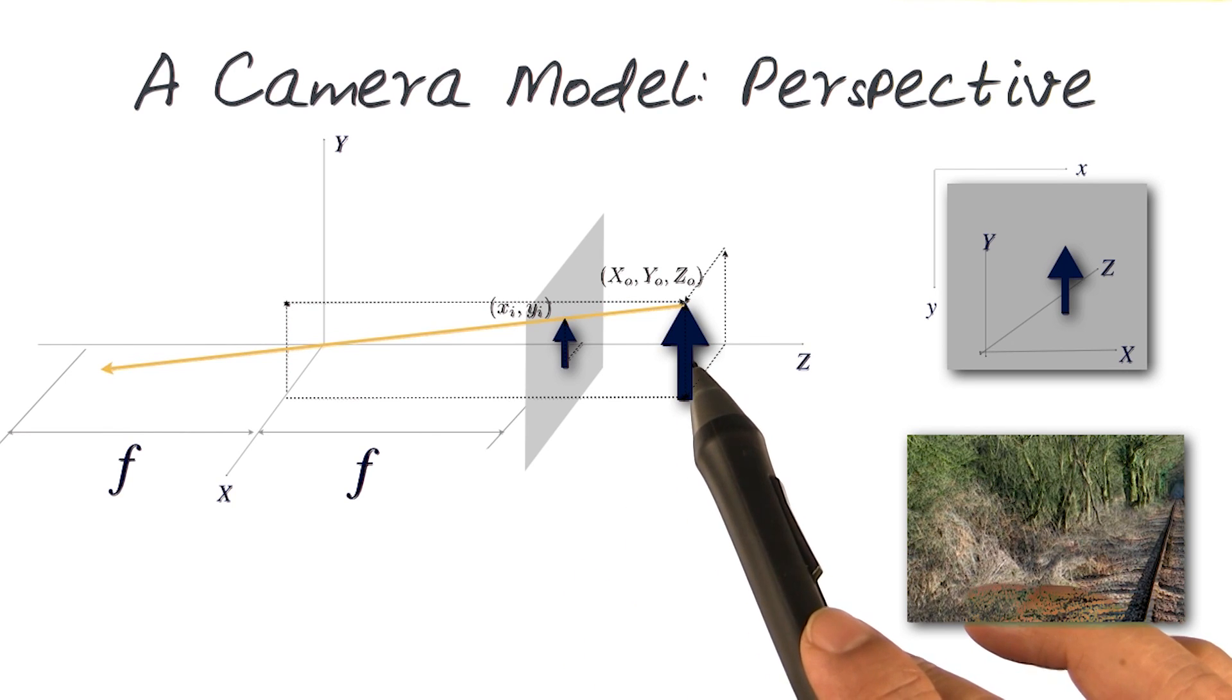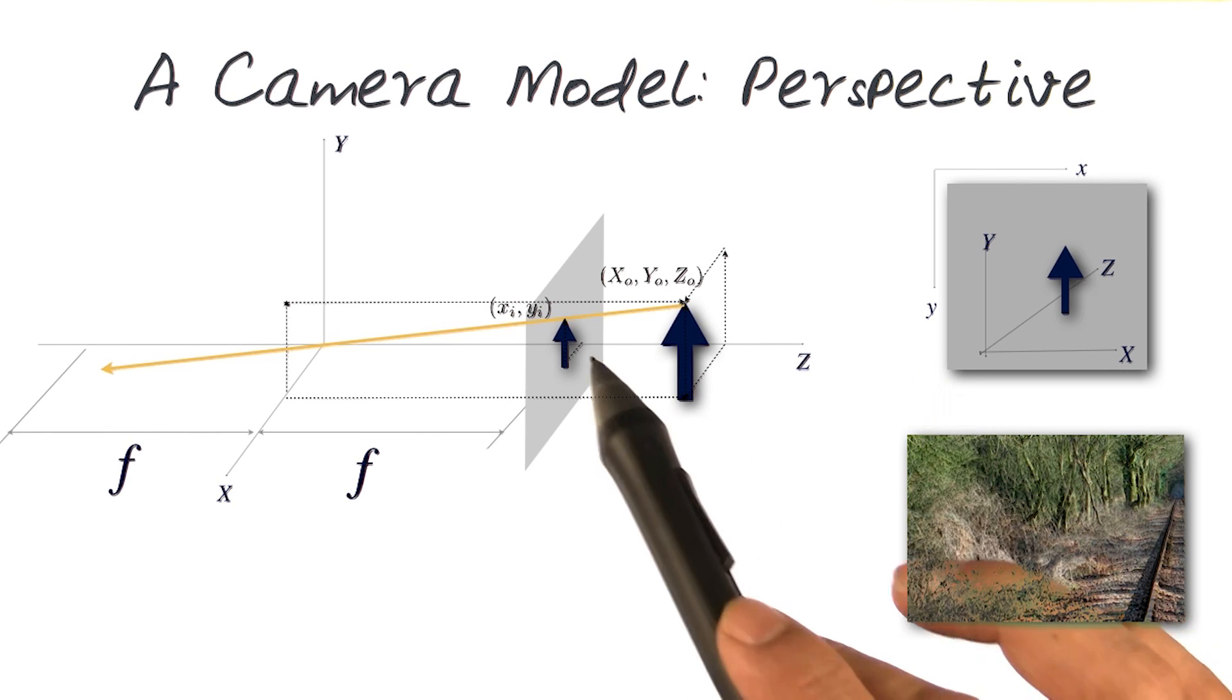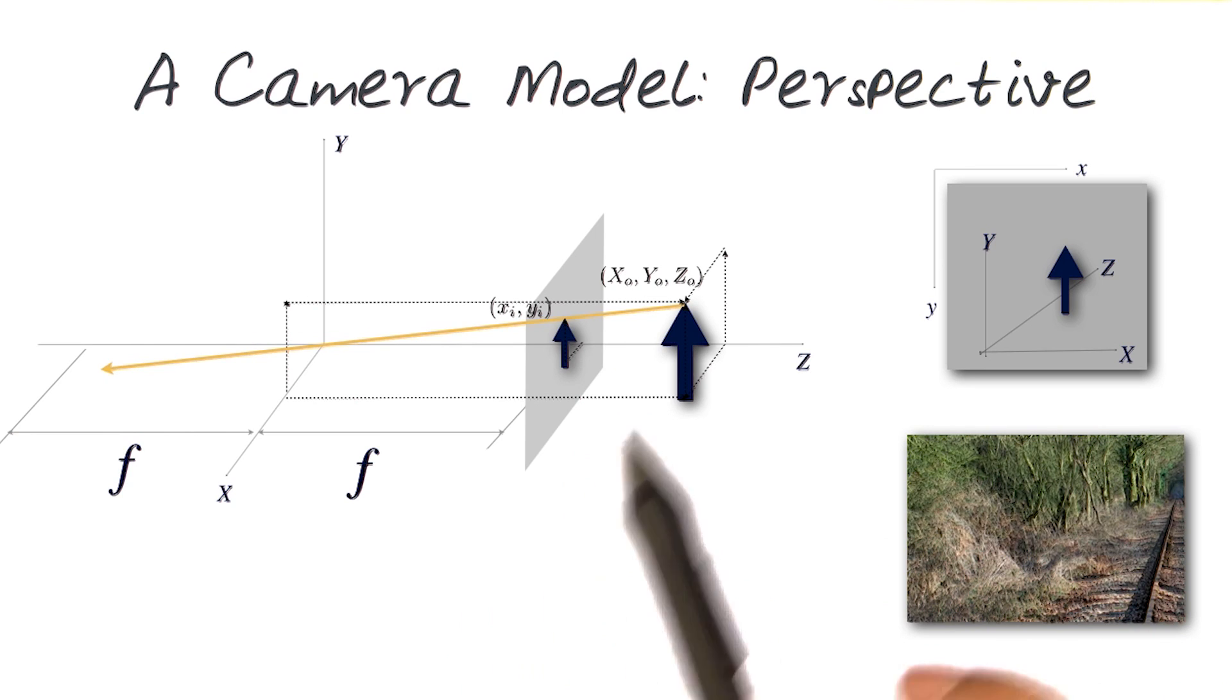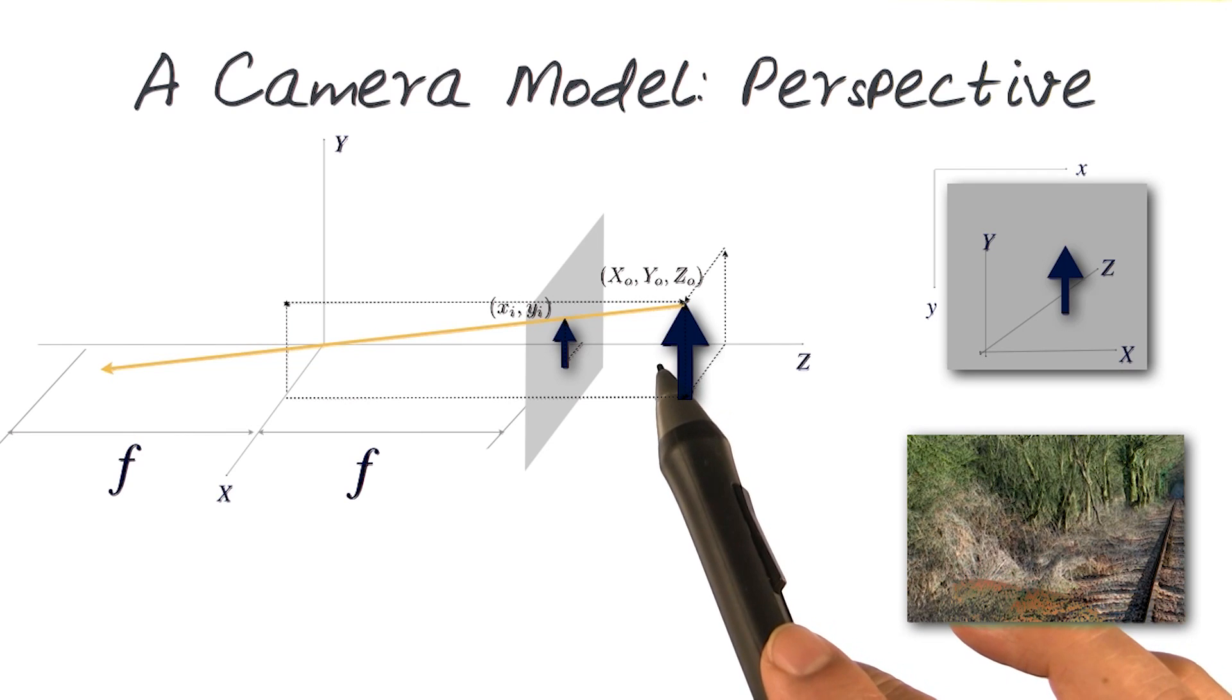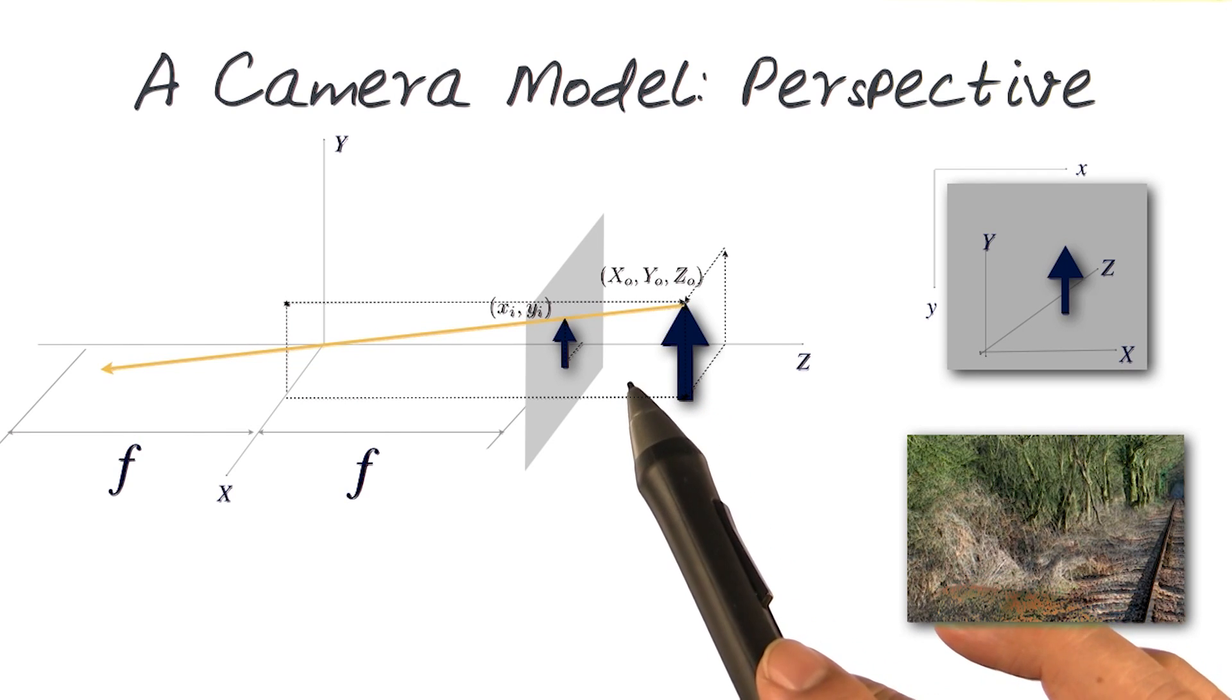Of course, you notice that if this object was farther away, the image would be smaller. If the object was closer, the image would be larger. And that's exactly what we noticed when looking at lenses and how the impact of lenses with moving objects was.